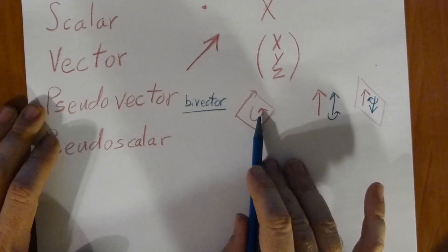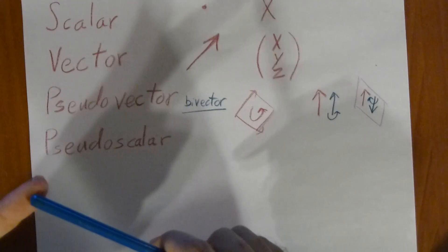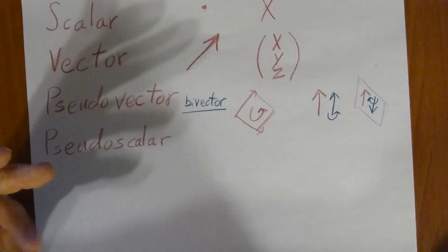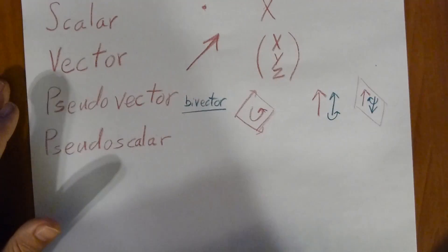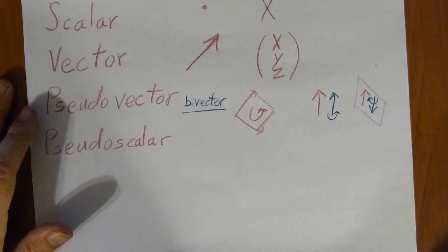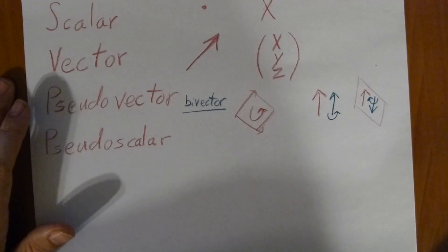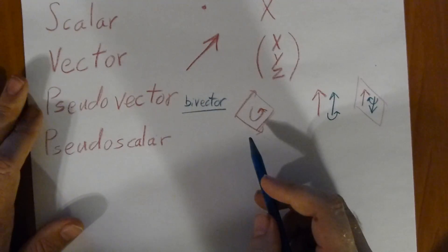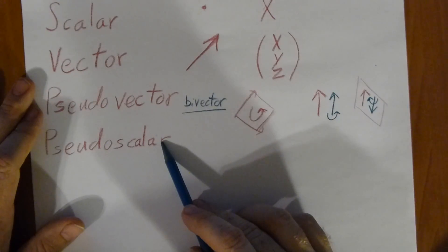Pseudovector tends to be things regarding rotation, so we have things as angular momentum, torque, rotations, rotational velocity. Although I suppose if we took the magnitude of those, we could argue they're pseudoscalars.